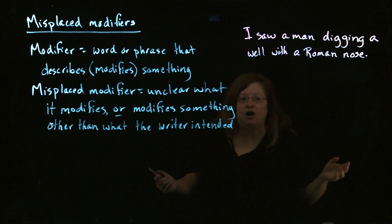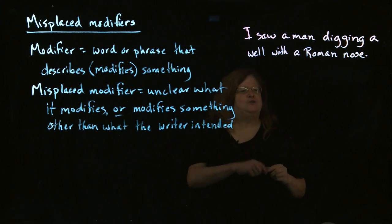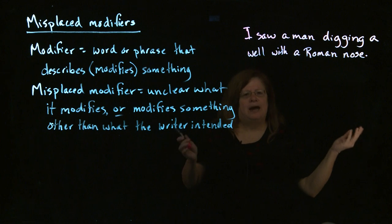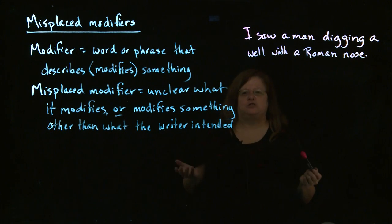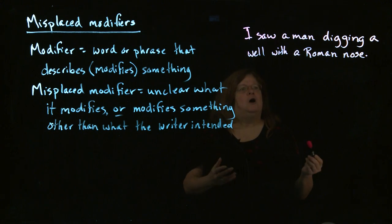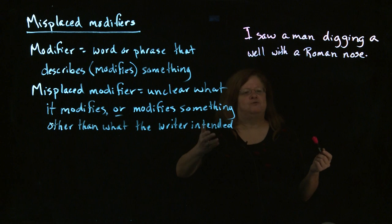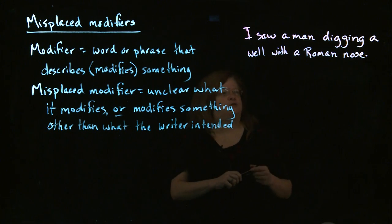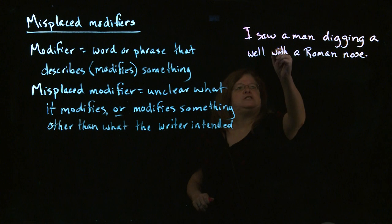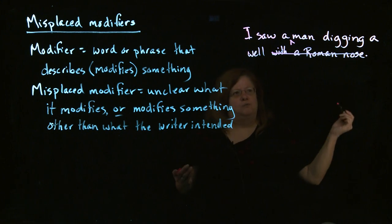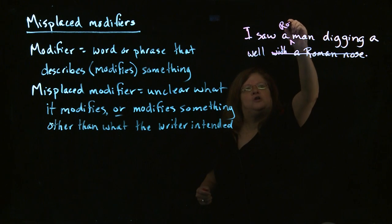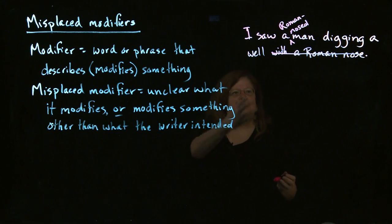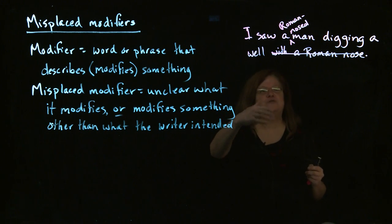He's got this gigantic schnozola and he's using it to dig a well. Then you think a little longer and realize — no, actually the man is who has the Roman nose. That makes a bit more sense, but the way the sentence is written it doesn't. I might say "I saw a man with a Roman nose digging a well" — that works a little better, but it's still somewhat ambiguous, because the nose might still seem to be digging. A cleaner fix is: "I saw a Roman-nosed man digging a well" — now it's clear the nose is just on his face.